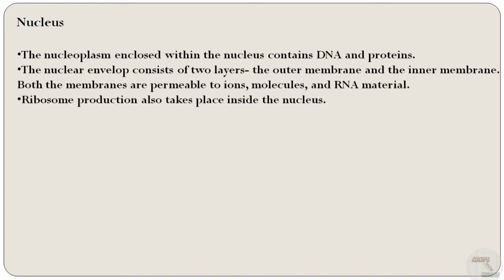Next is the nucleus. The nucleus is a membrane-bound cell organelle that contains the genetic material of eukaryotic organisms. It serves to maintain the integrity of the cell by facilitating transcription and replication processes. It is the largest organelle inside the cell, taking up a tenth of the entire cell volume. A nucleus is made up of several components: nuclear envelope, nucleolus, chromosomes, and nucleoplasm. The nucleoplasm contains DNA and proteins. The nuclear envelope consists of two layers — the outer membrane and the inner membrane — both permeable to ions, molecules, and RNA. Ribosome production also takes place inside the nucleus.